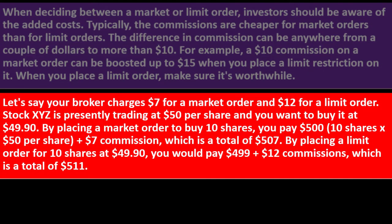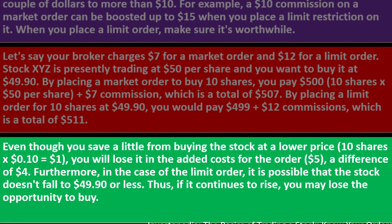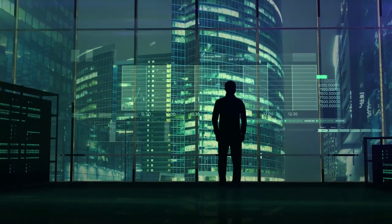For example, if your broker charges $7 for a market order and $12 for a limit order, and stock XYZ trades at $50 per share and you want to buy at $49.90: placing a market order for 10 shares costs $500 plus $7 commission, totaling $507. With a limit order, you save $1 on price but pay $5 more in commission — a net loss of $4. Furthermore, if the stock never falls to $49.90, the limit order won't execute and you may miss the opportunity to buy.